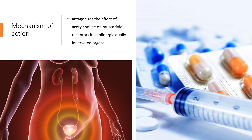Mechanism of Action. Trospium antagonizes the effect of acetylcholine on muscarinic receptors in cholinergic dually innervated organs. Its parasympatholytic action reduces the tonus of smooth muscle in the bladder.